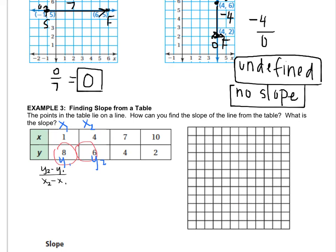Again, it doesn't matter which one you label, you just have to be consistent. Now we plug in y2 is 6, y1 is 8, x2 is 4, x1 is 1. Simplify that. And that's the slope, negative 2 thirds.